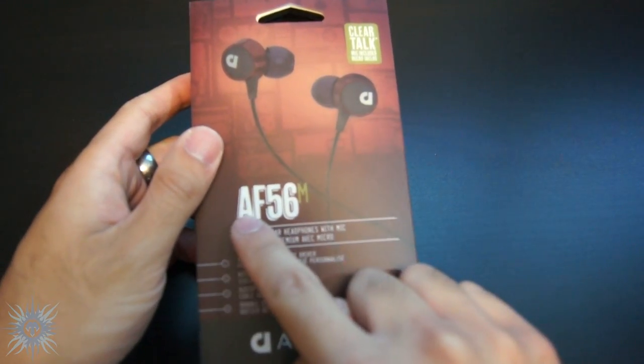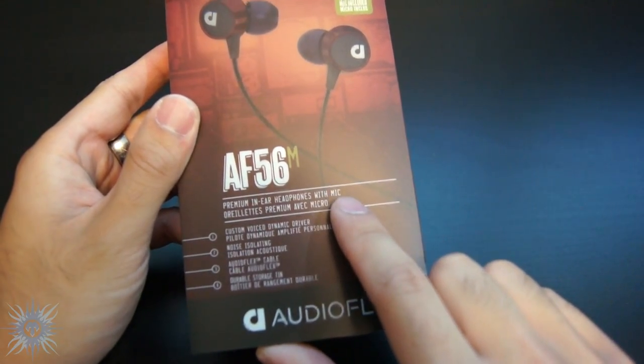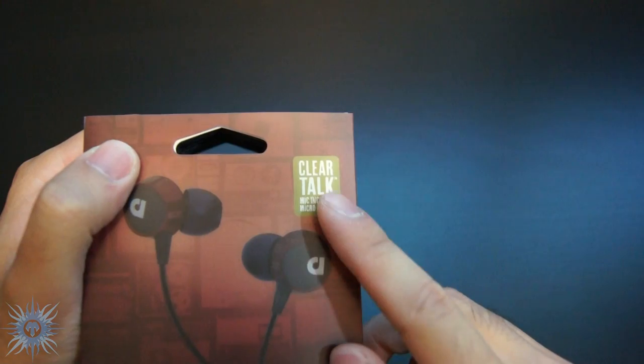This model does come in two colors, I got the Vino color, the model number is underneath that, and the M at the end just means it's the version with the ClearTalk microphone included for voice calls.